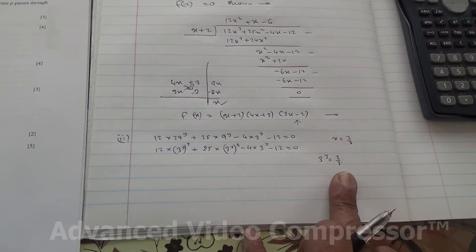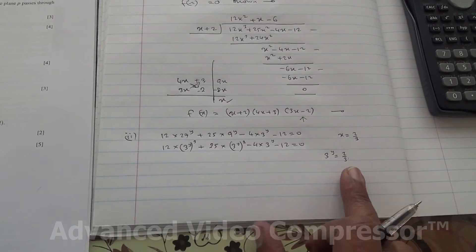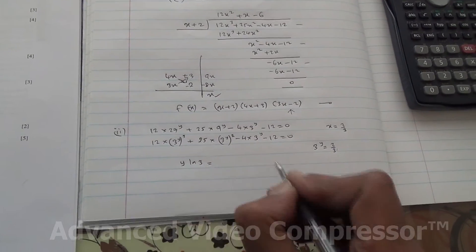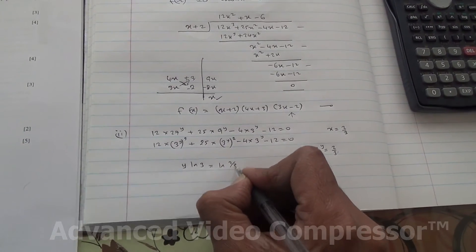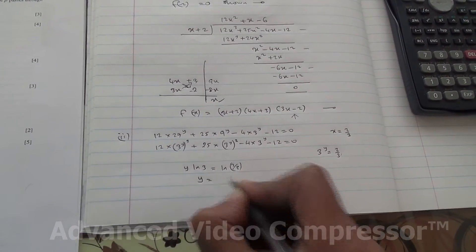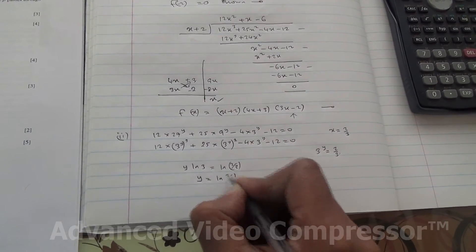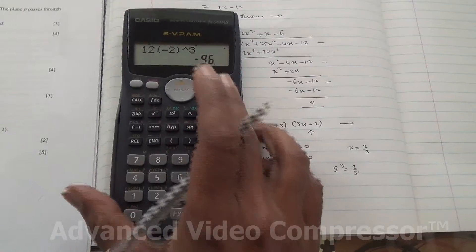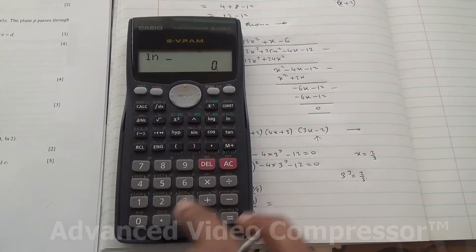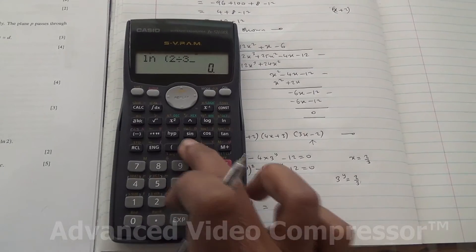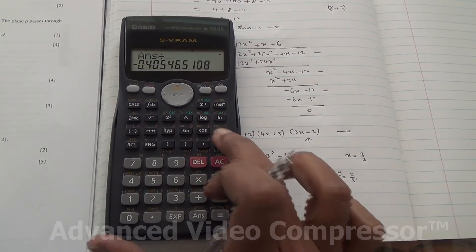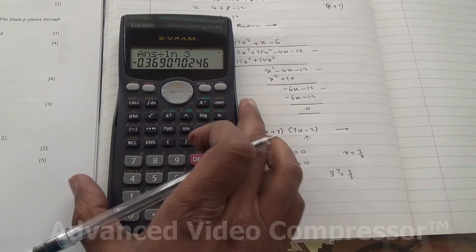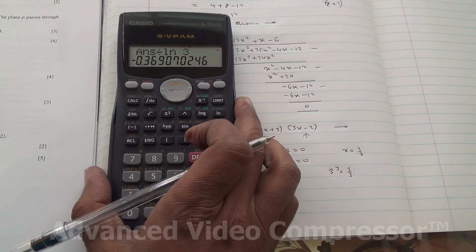So, we need to evaluate this to three significant figures, so let's do it. So, y ln 3 is equal to ln(2/3), so y is equal to ln(2/3) divided by ln 3. And that's going to give us, from the calculator, ln(2/3) divided by ln 3, it's going to give us -0.369.